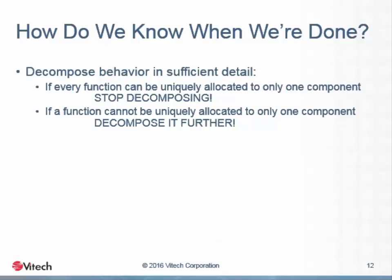It's very easy to overanalyze the situation. Ultimately, the systems engineers have to hand over a detailed design to the next step in the production process — software, electrical, and mechanical engineers, for example — and they need to know when to stop their design effort. Once every function in the behavior has been uniquely allocated to a single component, we can stop the decomposition. If the function cannot be uniquely allocated to a single component, then further decomposition is required. The rule is that a function can only be allocated to a single component; however, that does not prevent a single component from performing multiple functions.